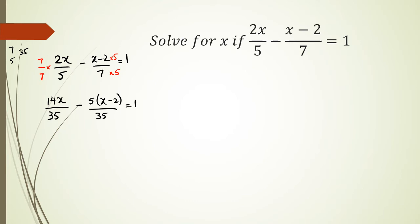Now, before I actually expand this bracket out, what I would recommend you guys to do is to write it like this. Because both the denominators are the same, we can write 14x minus 5 times x minus 2, and the whole thing over 35 equals 1.